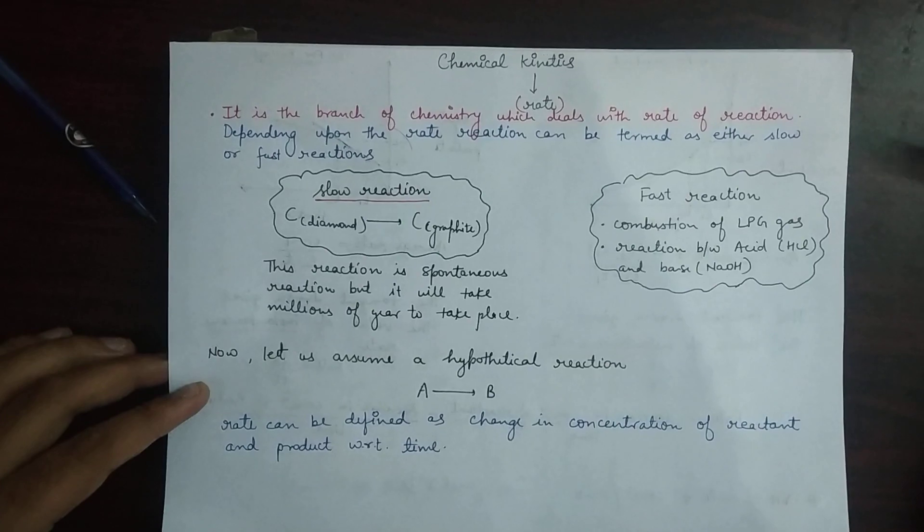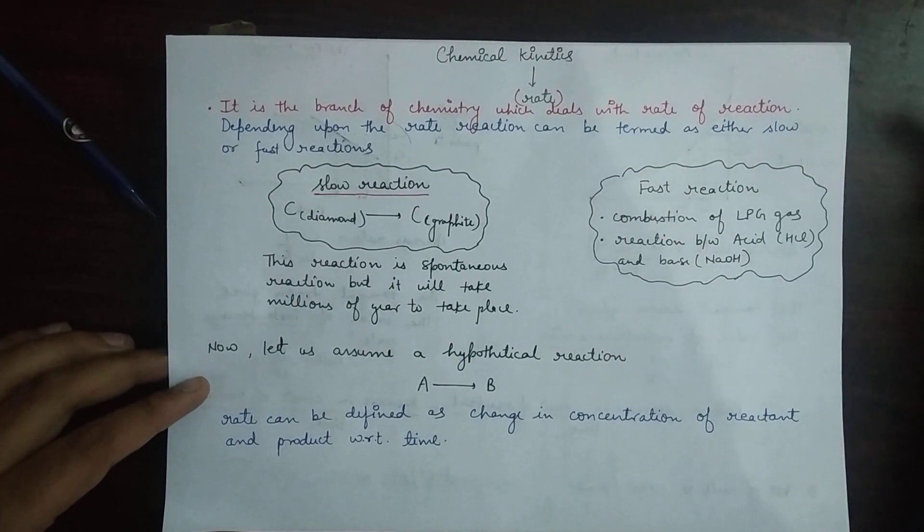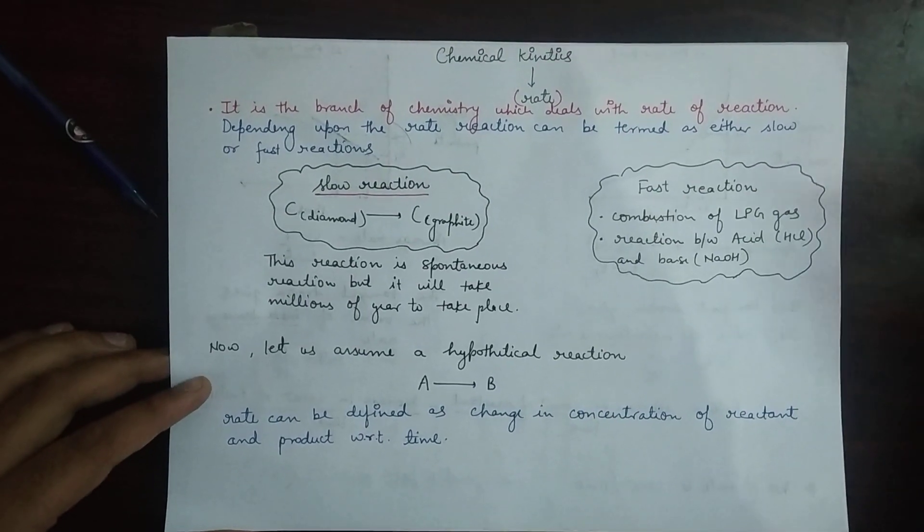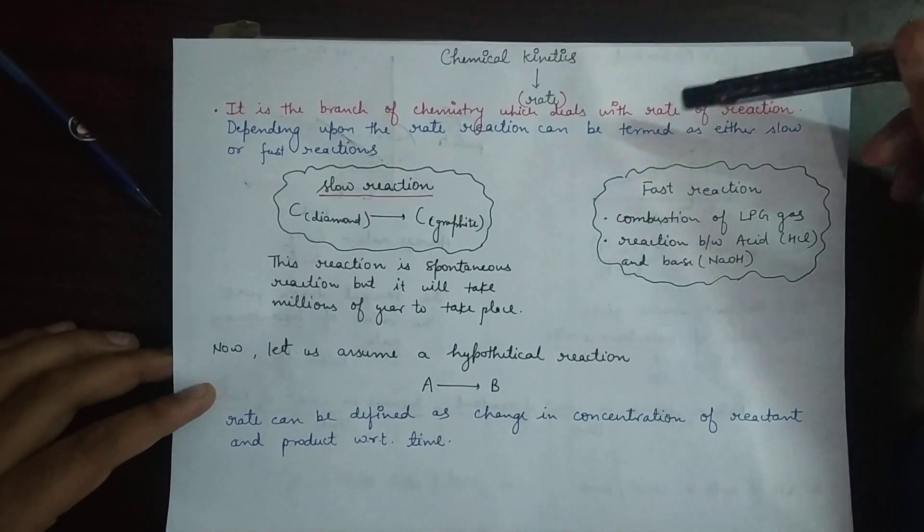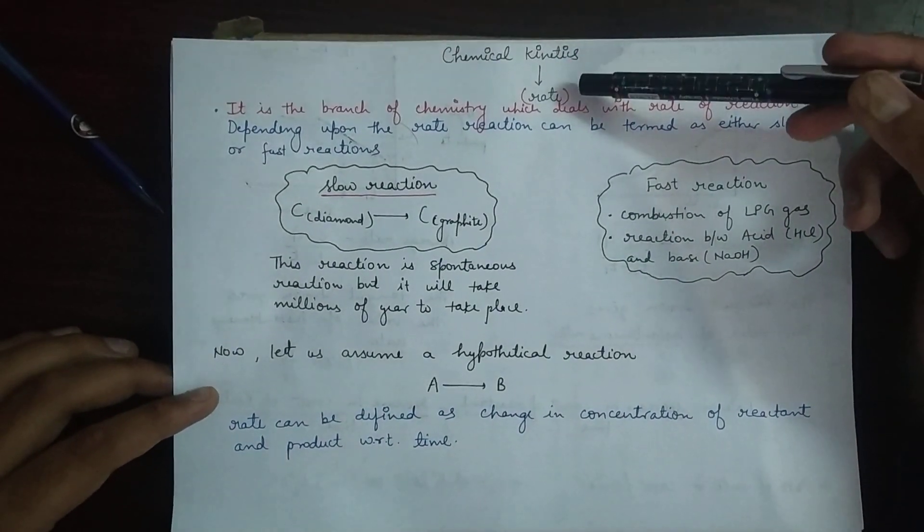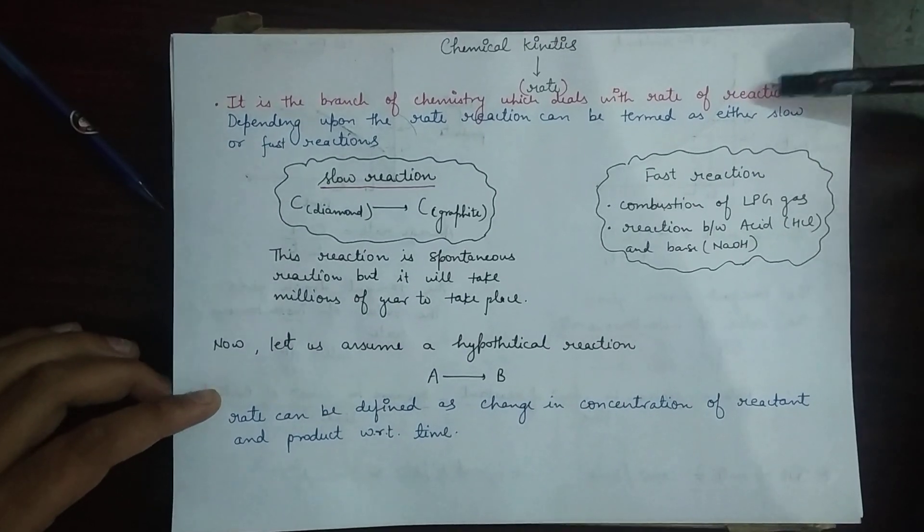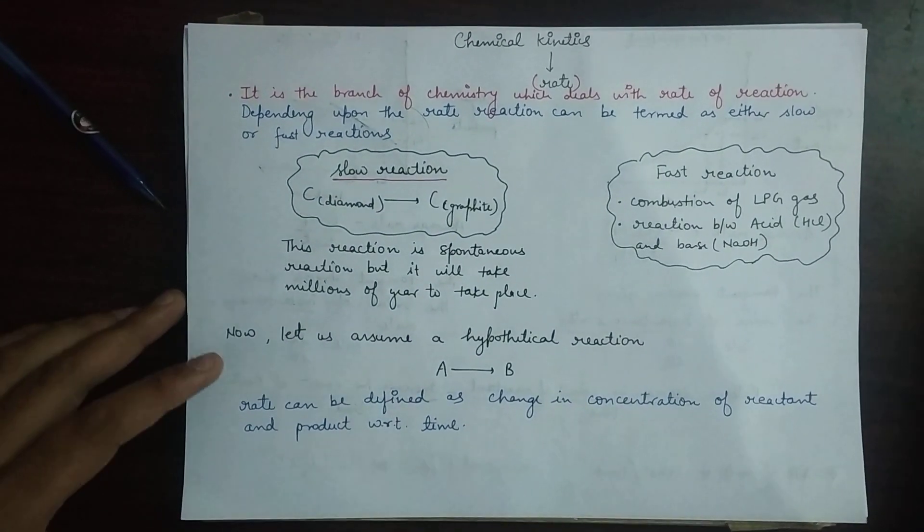Chemical kinetics—as we know, the word kinetics means the rate of reaction. You all are familiar with the word kinetics, that is kinetic energy, which relates to speed or motion. In chemistry, chemical kinetics is related to the rate of reaction. It is a branch of chemistry which deals with the rate of reaction.